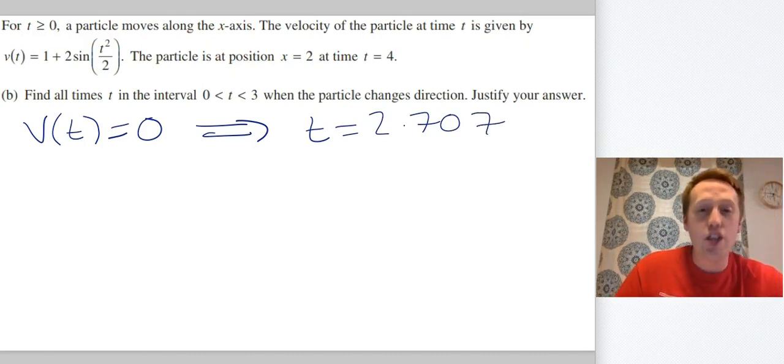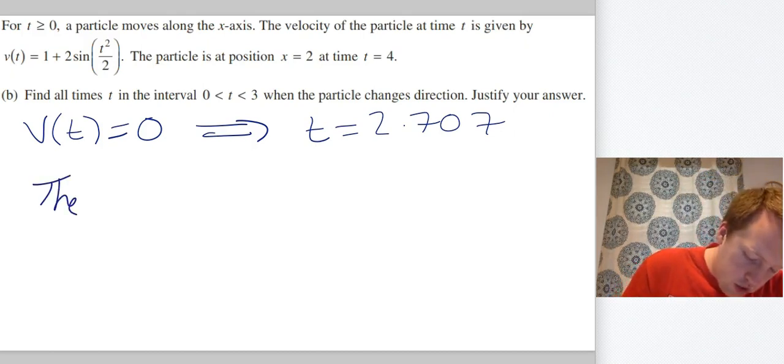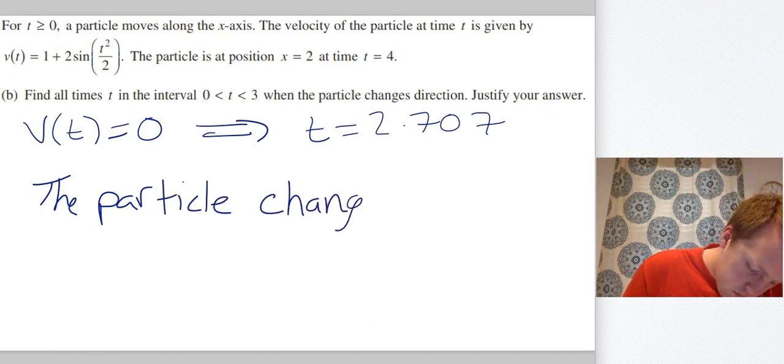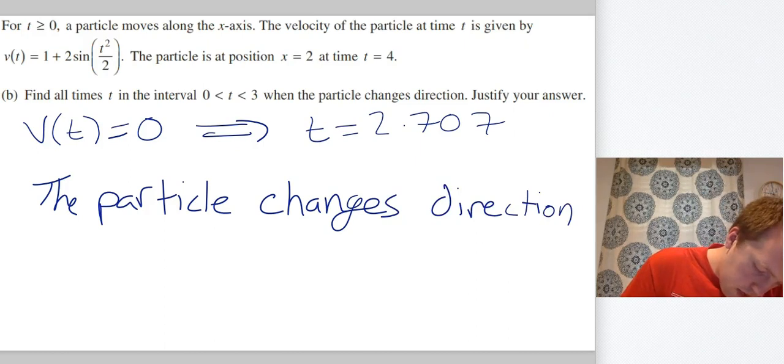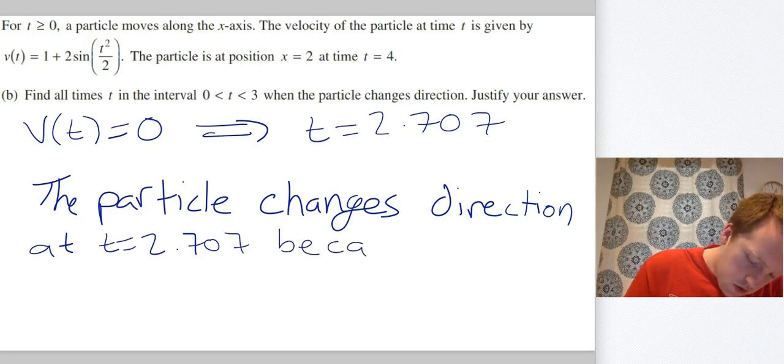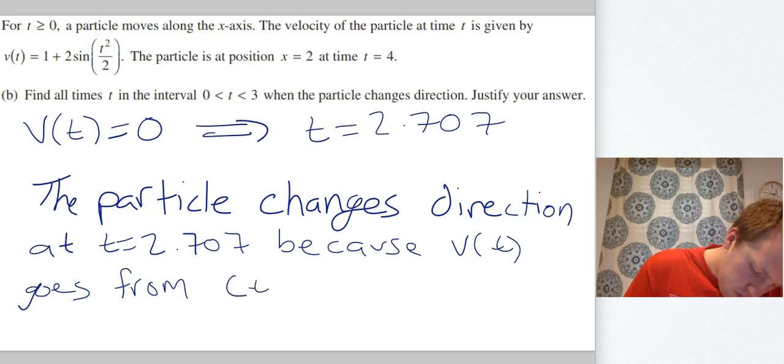So I've got the time, I need to justify my answer. Well when you see the graph of this, you end up seeing that the velocity changes from positive to negative, so the particle changes direction at t = 2.707 because v(t) goes from positive to negative here.